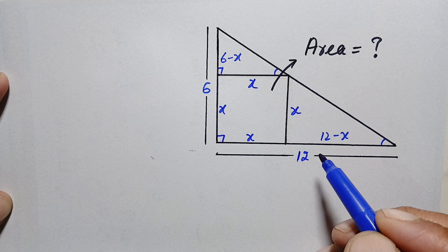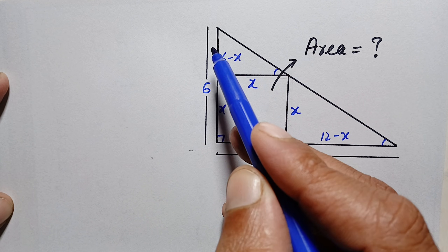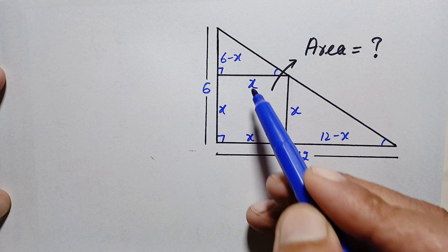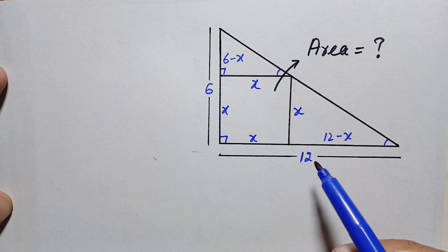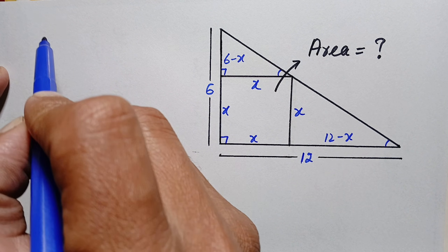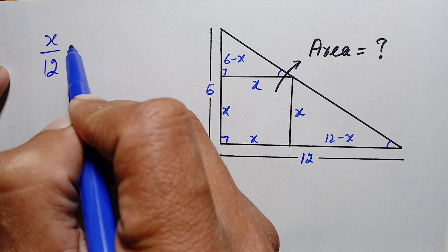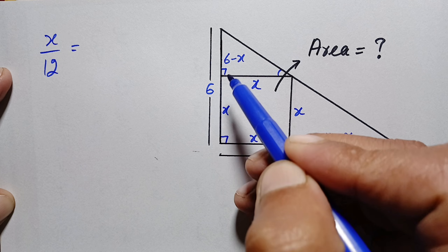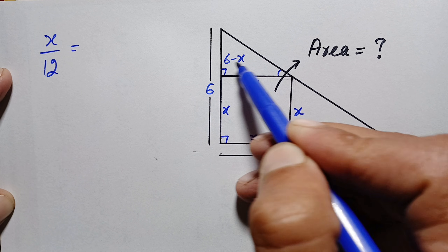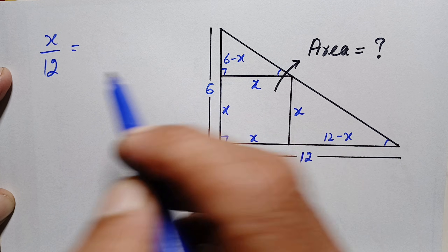Since these two triangles are similar, the ratio of their corresponding sides will be equal. We take the ratio of their bases and heights. The base of the small triangle is x and the base of the big triangle is 12 units. So x divided by 12 equals the ratio of their heights: 6 minus x divided by 6.